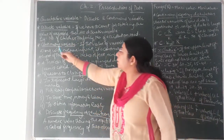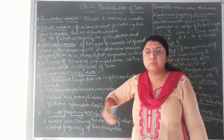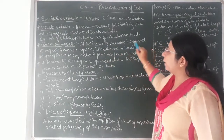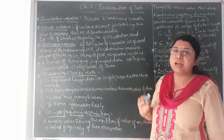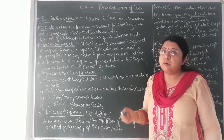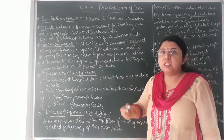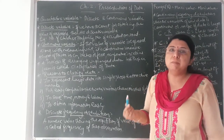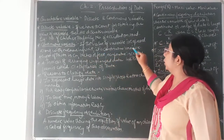Continuous variable means no gap — it is continuous. If the value of a variable is expressed along with a measuring unit, it is a continuous variable. For example, in centimetres, inches, litres, metres, feet — whatever the measuring unit may be — with a measuring unit, it is a continuous variable.